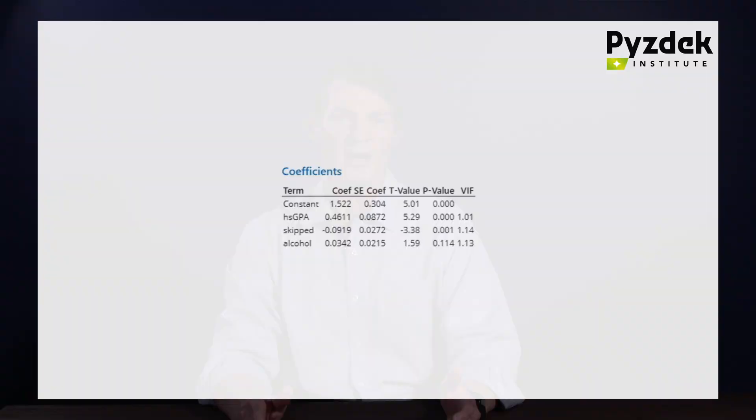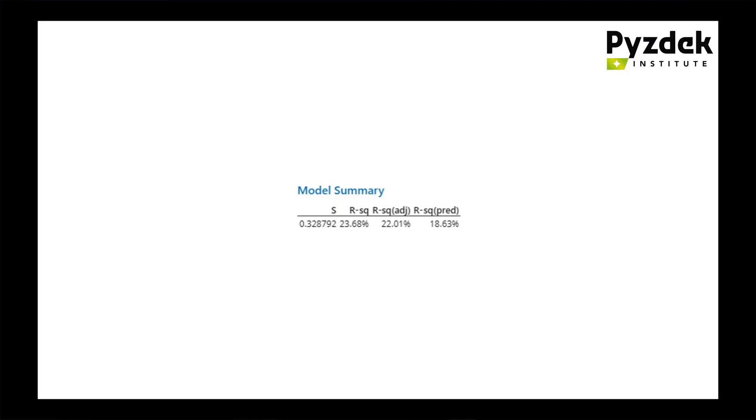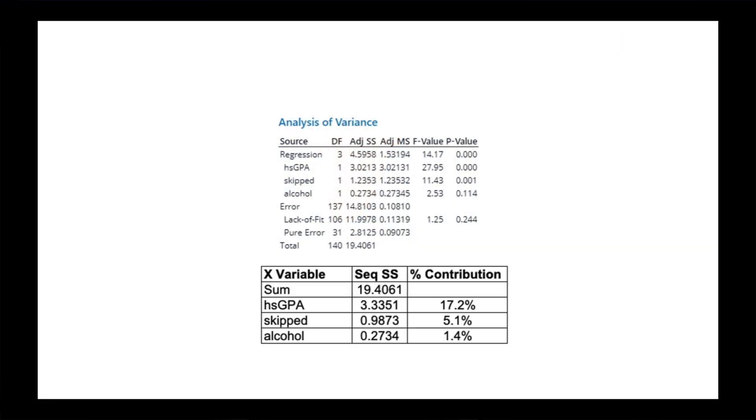Looking at our Minitab output, our VIF values are good. However, the P value for alcohol is not less than 0.05 — is it contributing significantly enough to keep in the model? Looking at R-squared, R-squared adjusted, and R-squared predicted — these are the same as the best subsets output table. By dividing each sequential sum of squares for the X variables by the total of 19.4061, I can examine the percentage contribution to the model. Not only does alcohol have an insignificant P value, but its total contribution is just 1.4%. As we seek the simplest model and avoid overfitting, we can drop this X variable and rerun the model.